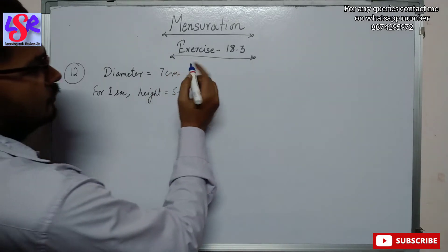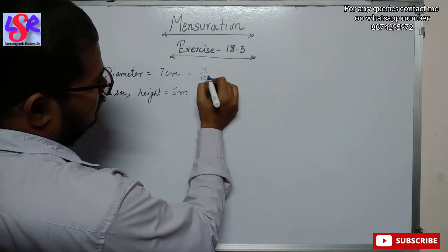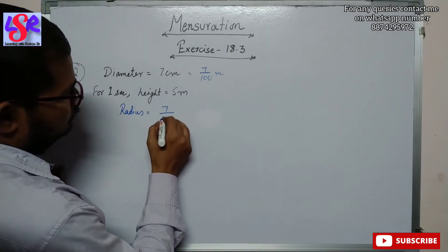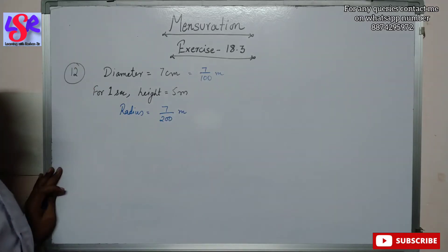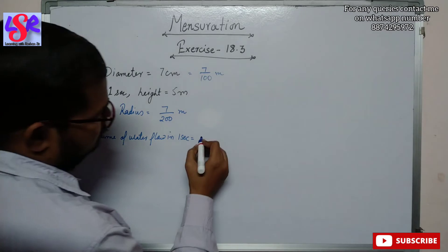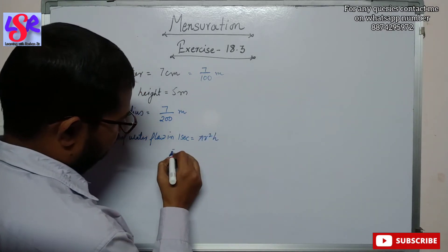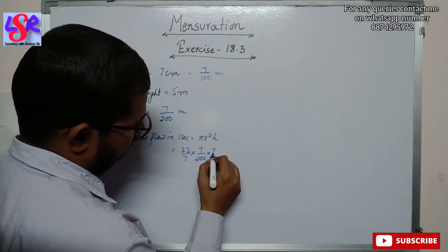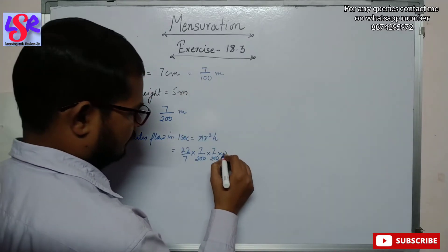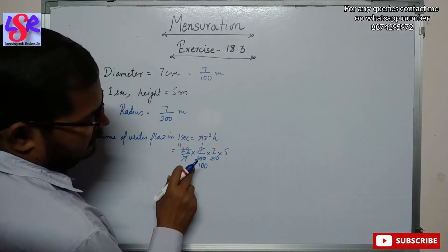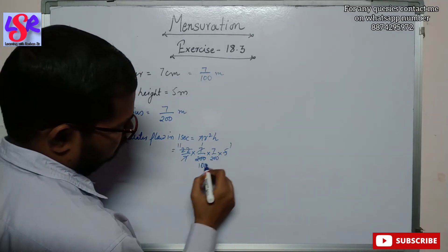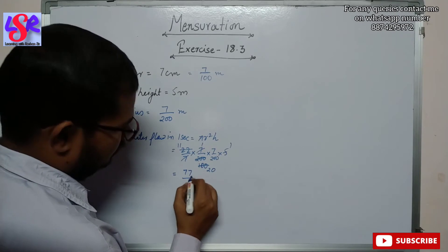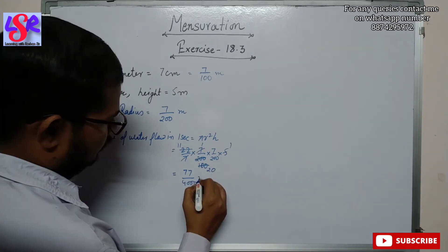We convert the diameter to metres: 7/100 m, giving radius = 7/200 m. Volume of water flowing in 1 second = πr²h = (22/7) × (7/200) × (7/200) × 5. The 7s and other common factors cancel, leaving 77/4000 m³ per second.